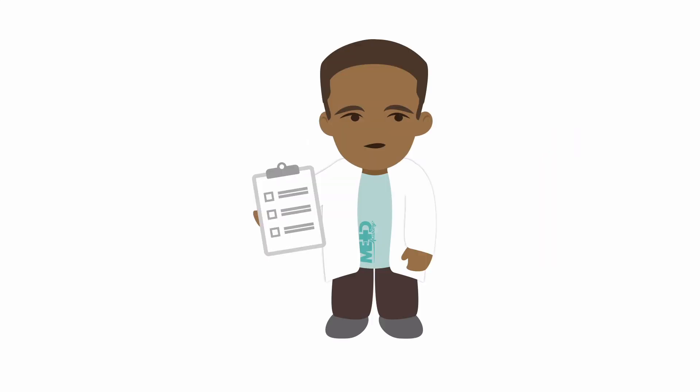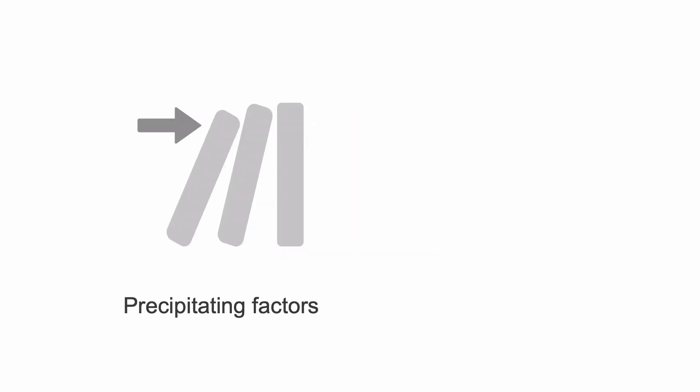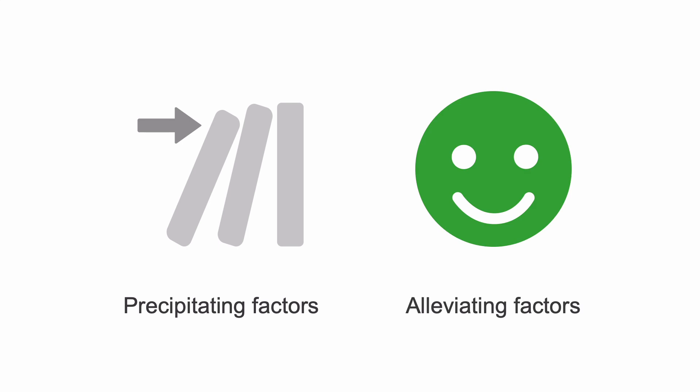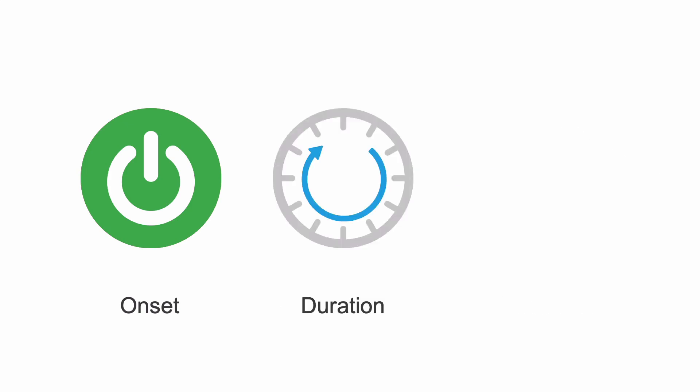When faced with a patient with generalized low back pain, start with a good history. Ask about precipitating and alleviating factors — that is, factors that make the pain worse or better. Ask about onset and duration of symptoms and attempted treatments, including any history of spinal surgery. You'll be amazed at how many patients forget to tell you that they've had previous major spinal surgery.